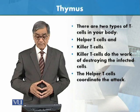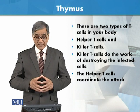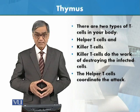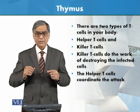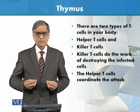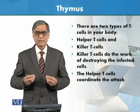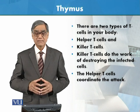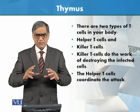Next to the killer T cells are the helper T cells. They coordinate the attack to maintain immunity. They do not produce any hormone or cells themselves, but they coordinate others — that is why we call them helper T cells.